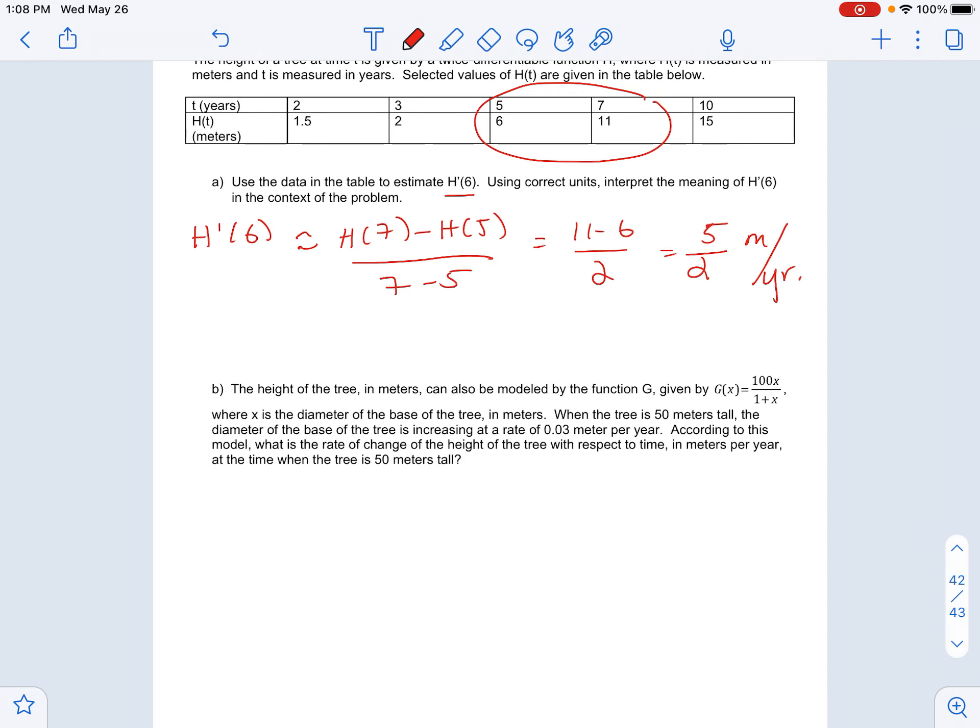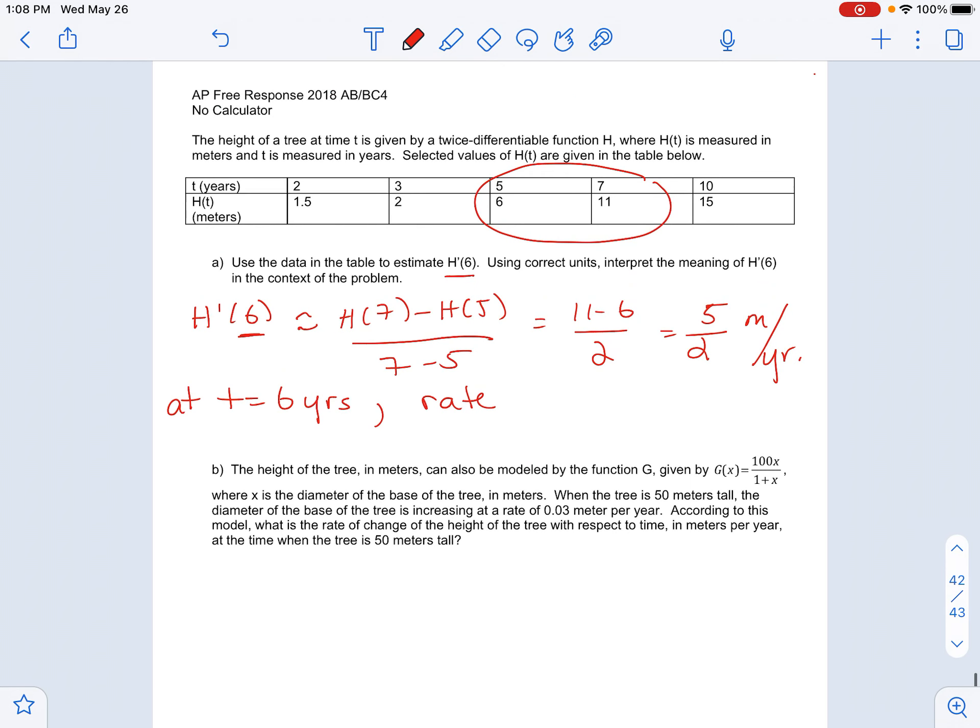And then your interpretation is, explain what this 6 means first. So at t equals 6 years, it's what's happening at one moment in time. And we're taking the derivative, so we want to use the word rate. And what is this talking about? It's the rate at which, talking about h, the height of the tree. And since we ended up with a positive number, we're going to say it's increasing by, and then just whatever you've got, meters per year. There's my interpretation.